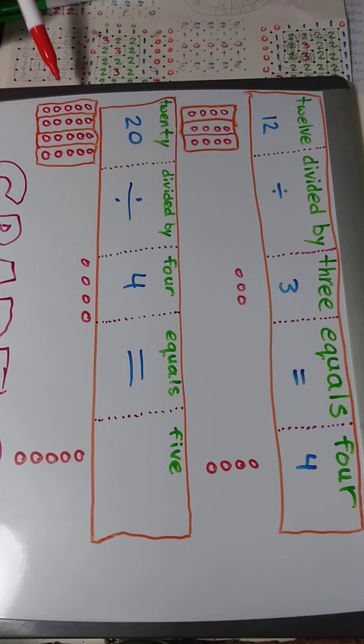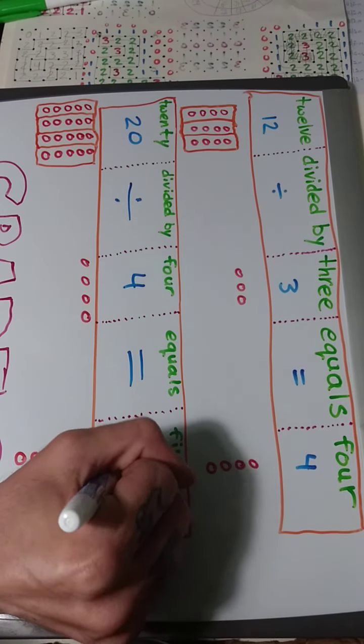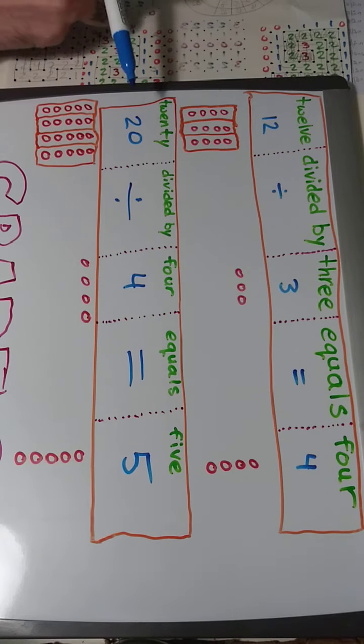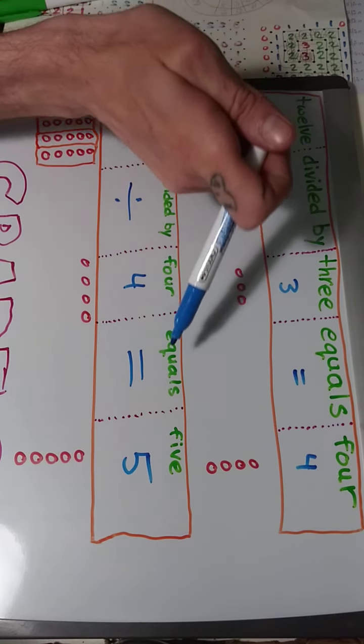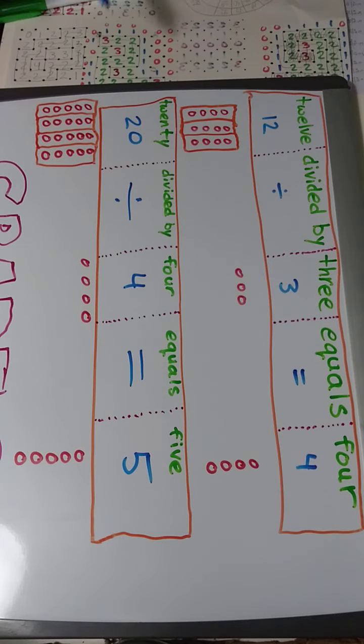1, 2, 3, 4, 5. And that is our answer: 5. When we have 20 and we divide it by 4, it will equal 5. So we have 20, we divided it into 4 boxes, and we have 1, 2, 3, 4, 5 in each box.